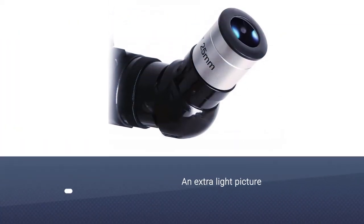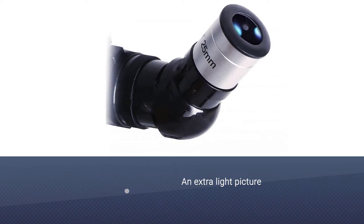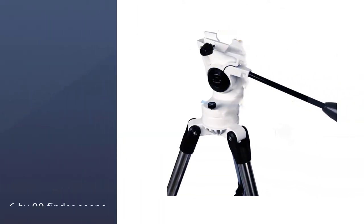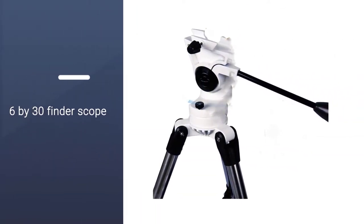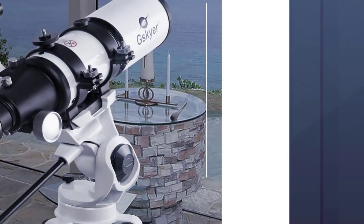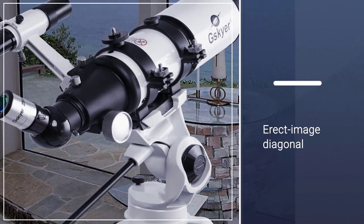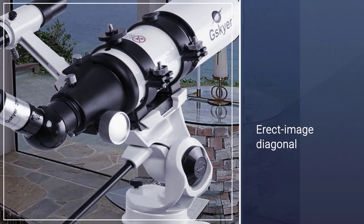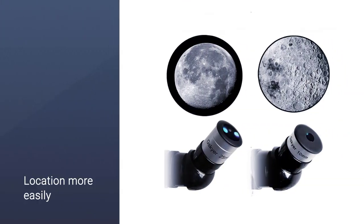It comes with an 80mm aperture and 400mm focal length to capture extra light, plus optical glass coating which enhances image brightness. It has three replaceable eyepieces, a 6x30 finder scope with mounting bracket, 3x Barlow lens, and an erect image diagonal which makes object location easier.